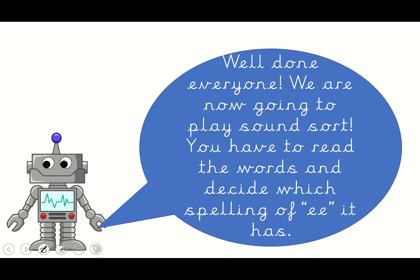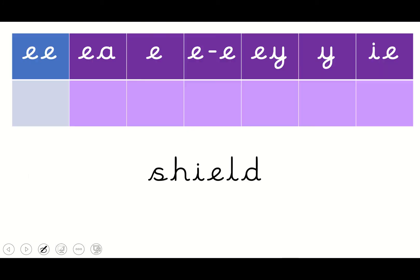Now we are going to play a sound sort. We've got to read the words and decide which spelling of E each word has. These are all the different spellings we just looked at. How many different ways of spelling E are there? Let's count them: one, two, three, four, five, six, seven. Seven different ways of spelling E! Oh my gosh.